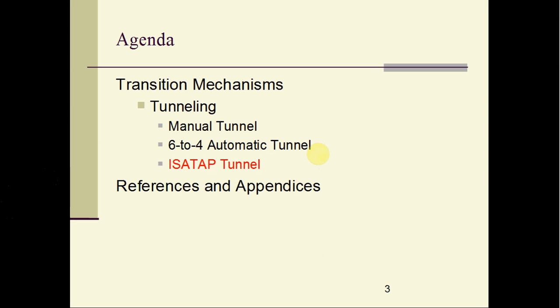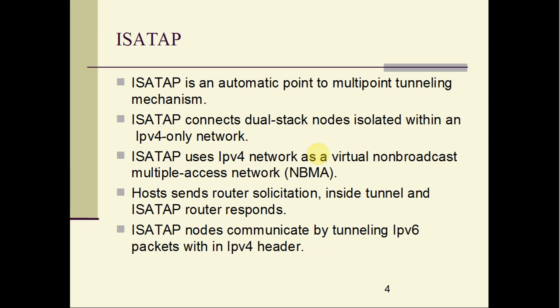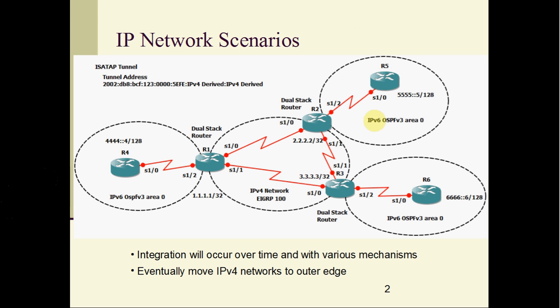ISATAP is an automatic point-to-multipoint tunnel and it treats the underlying IPv4 network as a non-broadcast multi-access (NBMA) network. Being point-to-multipoint in nature, one tunnel interface at each router can dynamically connect to any of the tunnel endpoints. So using one tunnel interface I can connect between router 1 and 2, and dynamically I can also connect to router 1 and router 3. The tunnel endpoint is dynamically discovered and learned depending upon which network we are trying to access.